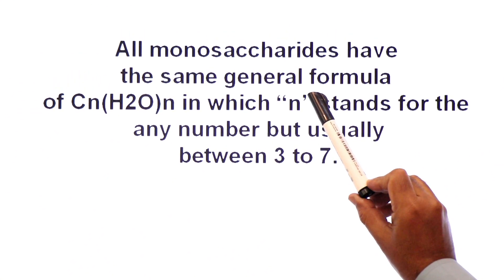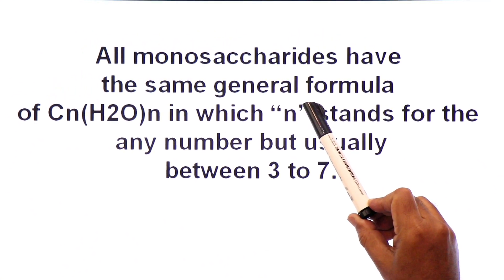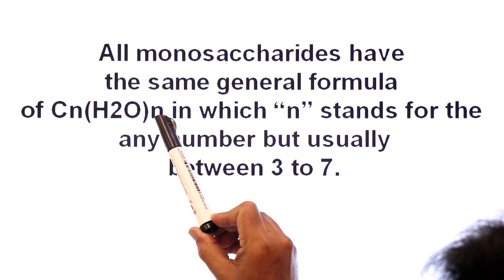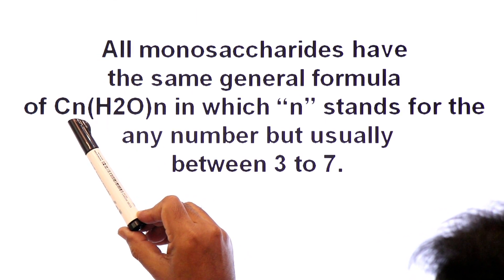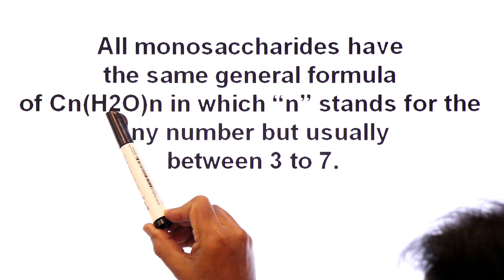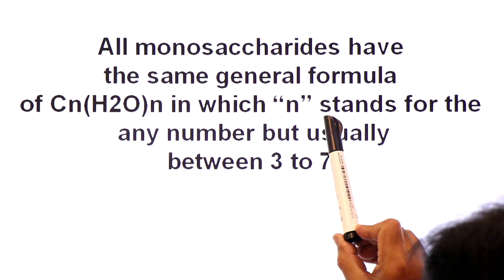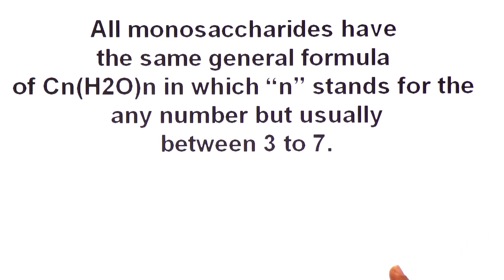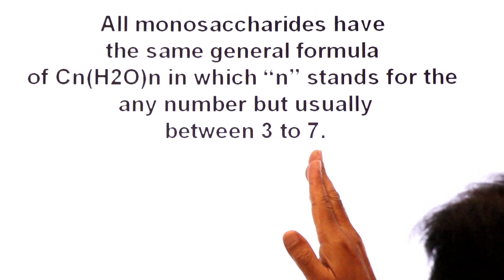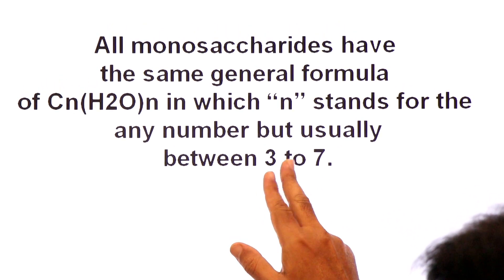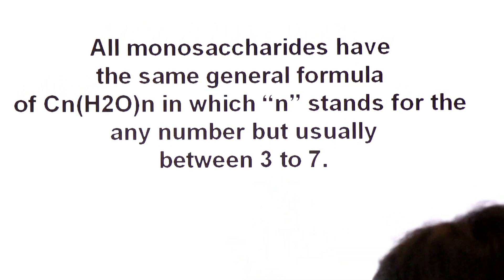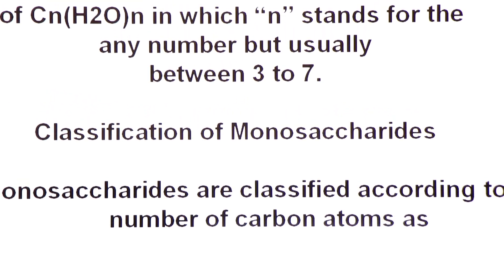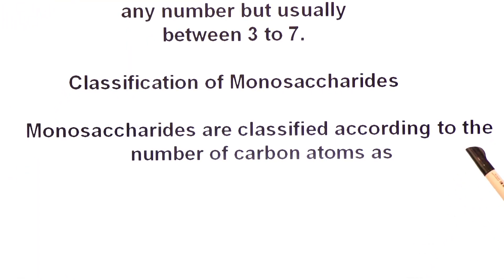All monosaccharides have the same general formula CnH2On, meaning they have equal parts of carbon and water molecules. The 'n' stands for any number, but usually between three to seven. The number of carbons in carbohydrates is variable, ranging from three to seven.